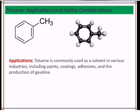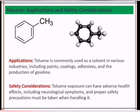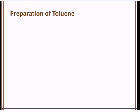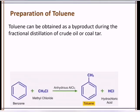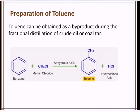It's also an important starting material for the synthesis of many organic chemicals. For the safety considerations, toluene exposure can have adverse health effects, including neurological symptoms, and proper safety precautions must be taken when handling toluene. For the preparation, it can be prepared from crude oil or coal tar. Toluene can be obtained as a by-product during the fractional distillation of crude oil or coal tar.